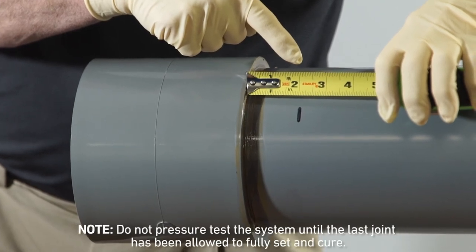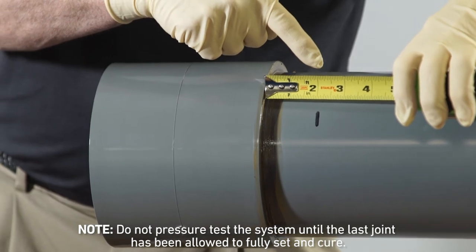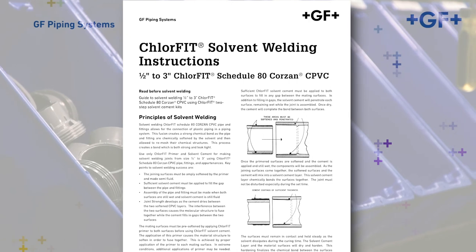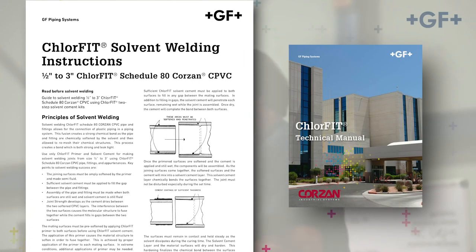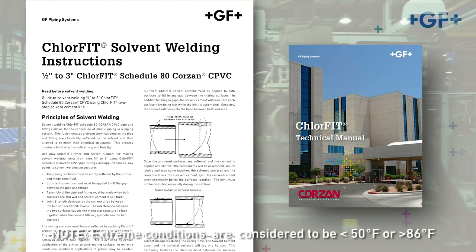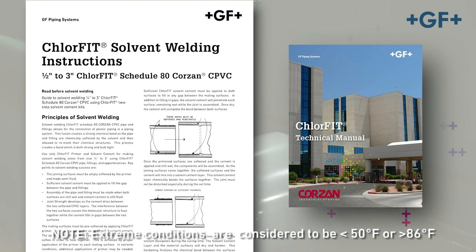Best practice includes labeling each joint with the installer's initials and date the joint was made. A table of set and cure times can be found in the installation instructions included, or the ChlorFit Technical Manual. For comprehensive instructions for solvent welding in extreme conditions, please refer to the installation instructions included in the solvent welding kit.